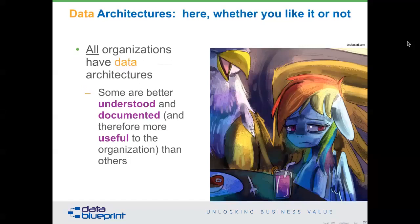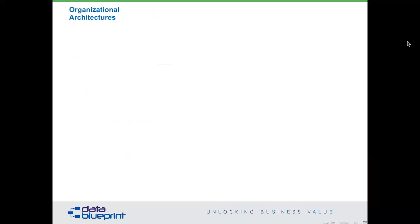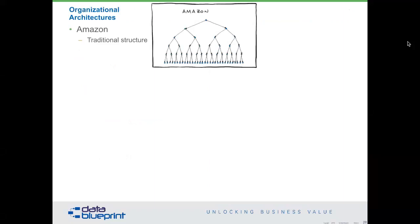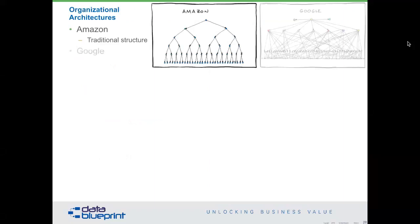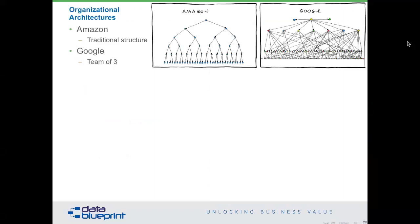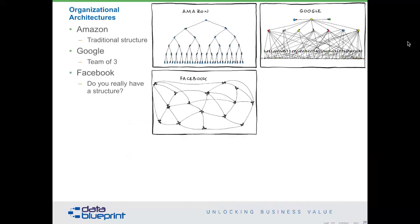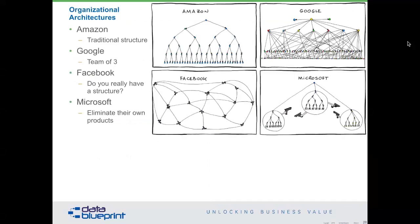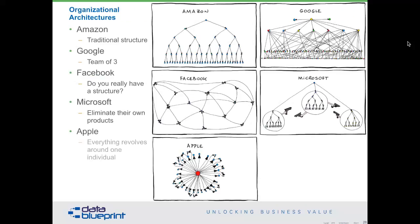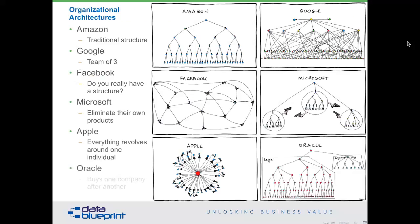Let's take a quick look at some organizational architectures. These are sort of funny but sort of true: Amazon — traditional structure; Google — team of three; Facebook — do we really have a structure; Microsoft — eliminate their own products; Apple — everything revolves around one individual; and Oracle — buys another company and subsumes it into the beast.